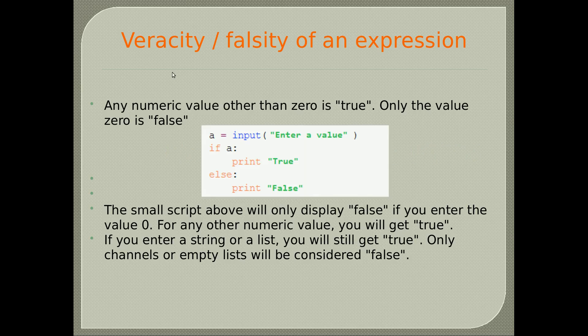Conditional execution: this represents testing the truth or falsity of an expression. Any numeric value other than zero is true. Only the value zero is false. The script above will only display false if you enter the value zero. For any other numeric value you will get true. If you enter a string or a list, you will still get true. Only empty strings or empty lists will be considered false.